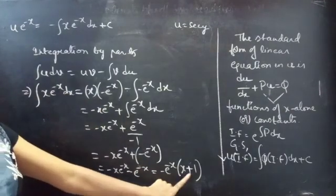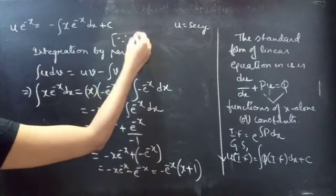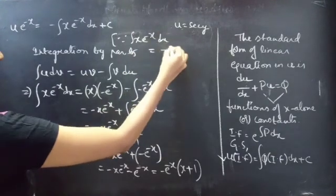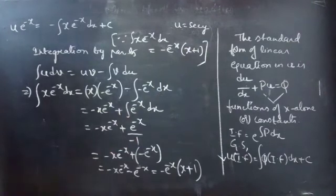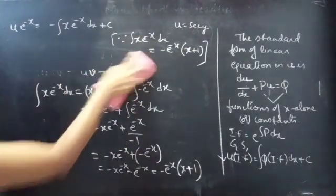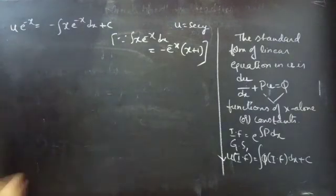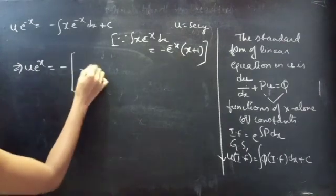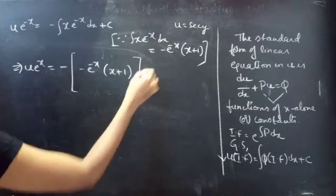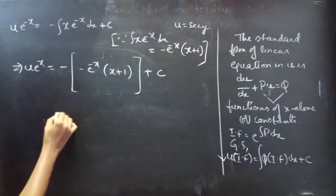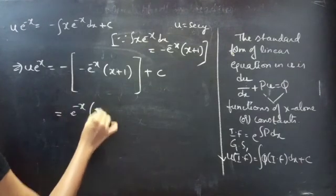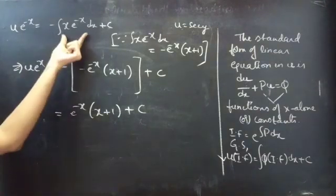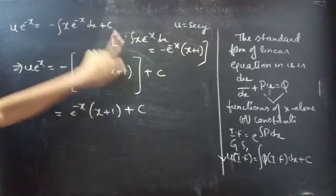So ∫ x · e^(−x) dx = −e^(−x)(x + 1). The above equation becomes: u · e^(−x) = −[−e^(−x)(x + 1)] + C = e^(−x)(x + 1) + C. We only need to write the constant of integration once at the final step.